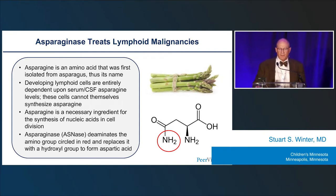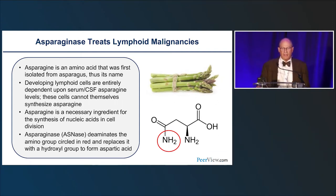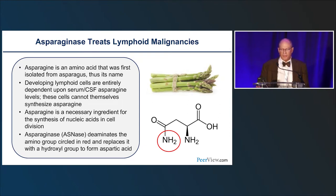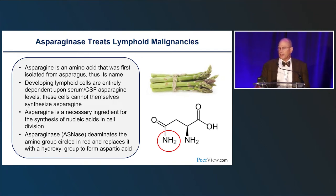As some of the people in the audience may know, asparagine is an amino acid that was first isolated in asparagus, which is where it gets its name. An interesting phenomenon is that developing lymphoid cells are entirely dependent on serum or CSF concentrations of asparagine — they can't make asparagine themselves. Asparagine is a necessary ingredient for the synthesis of nucleic acids in cell division. If this unusual situation did not exist about asparagine and lymphocytes, we wouldn't be having this talk today.